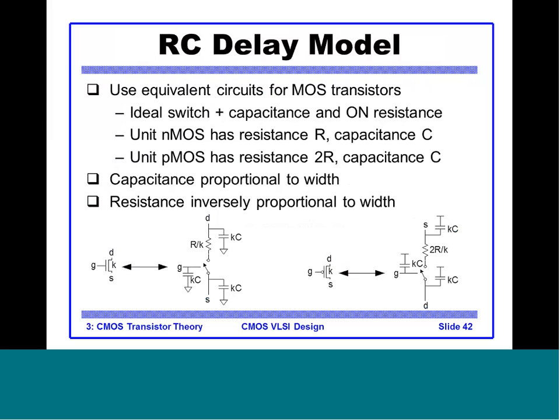We call this the RC delay model. A MOS can be represented as an ideal switch plus a capacitance and an on-resistance. When the switch is off, the resistance is infinite; when on, there is a finite on-resistance. A unit NMOS has resistance R and capacitance C. A unit PMOS has the same capacitance C but on-resistance 2R, because hole mobility is half that of electrons.